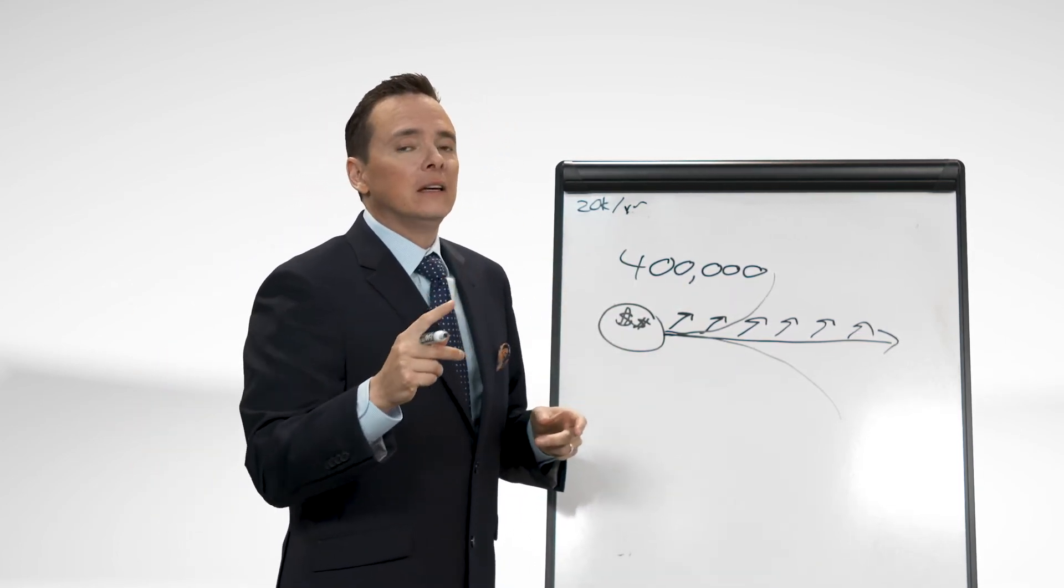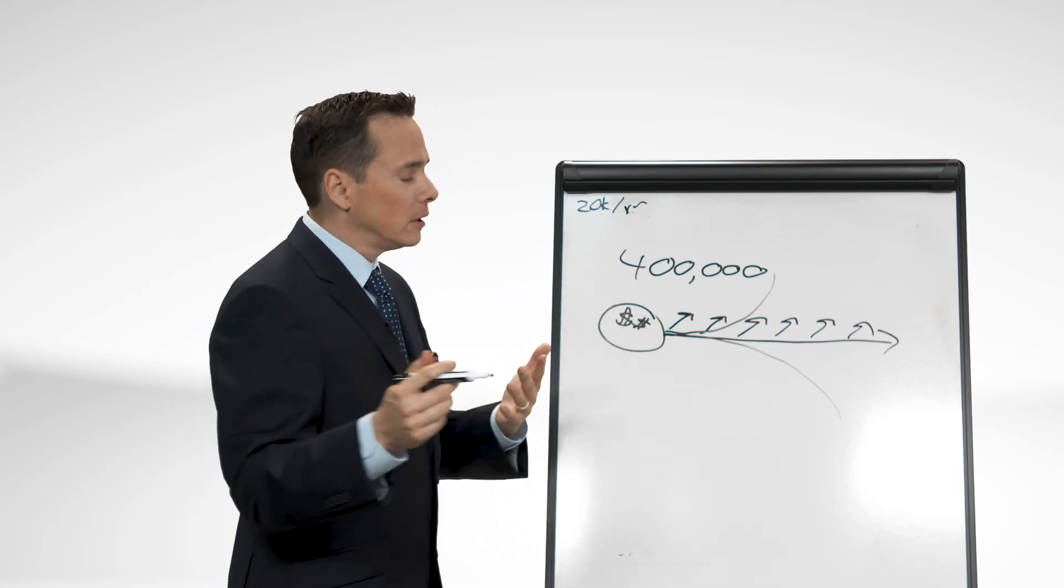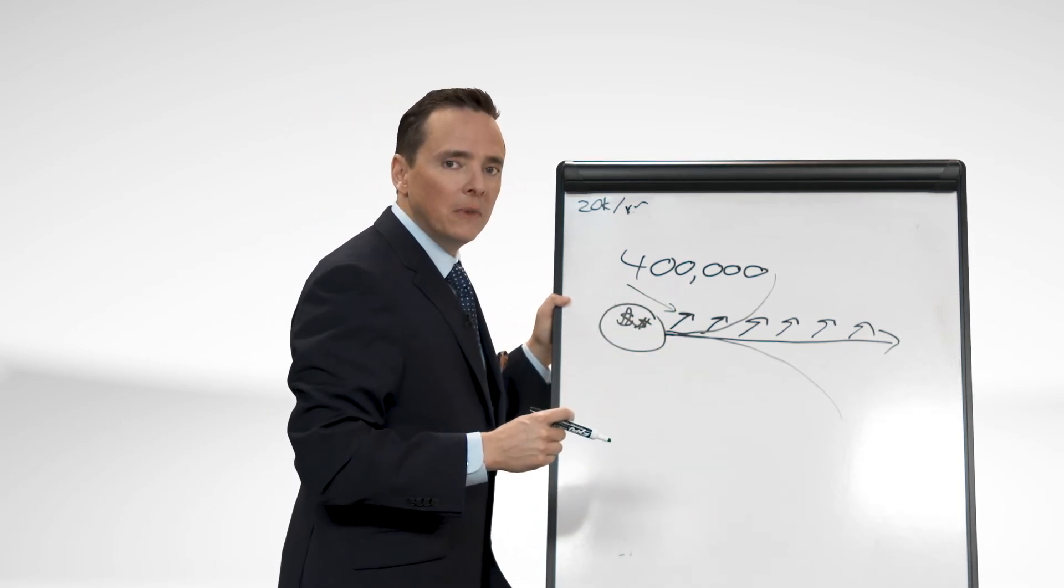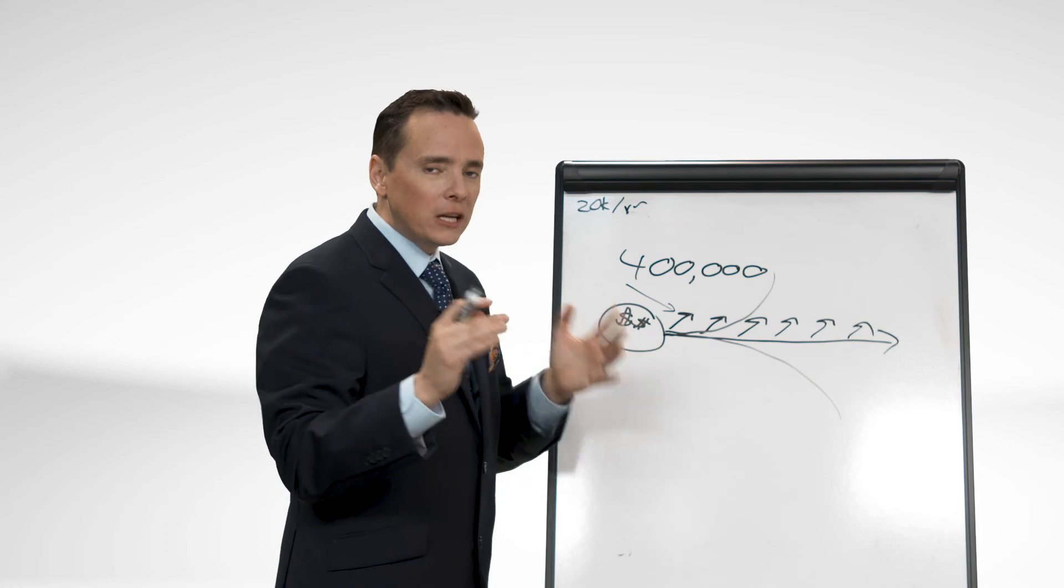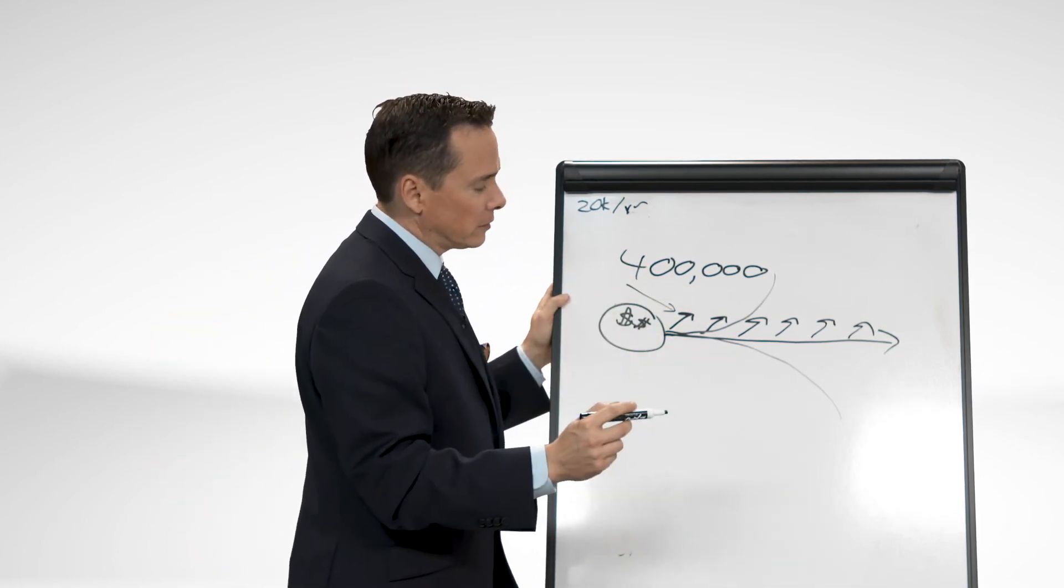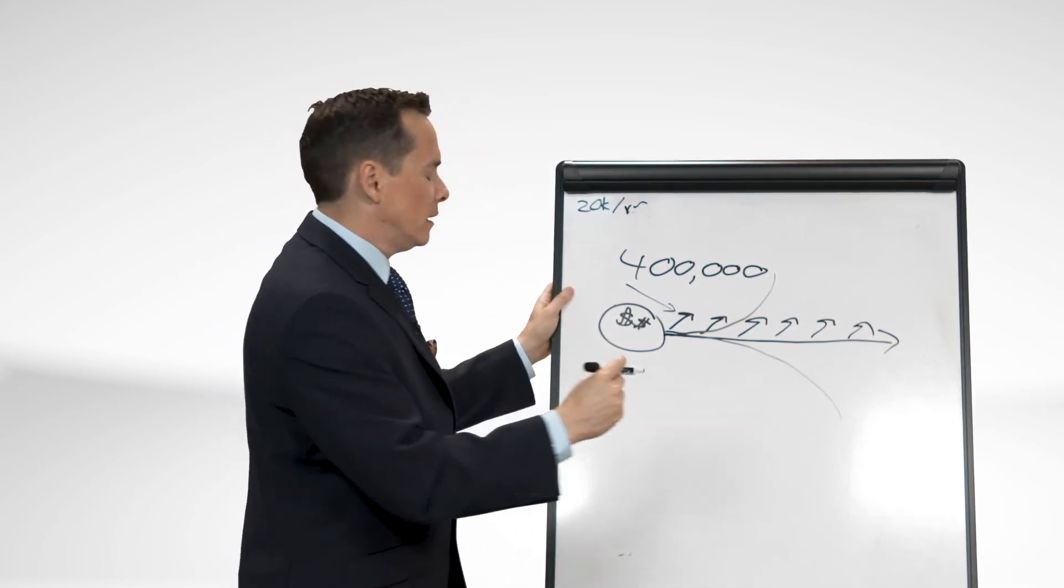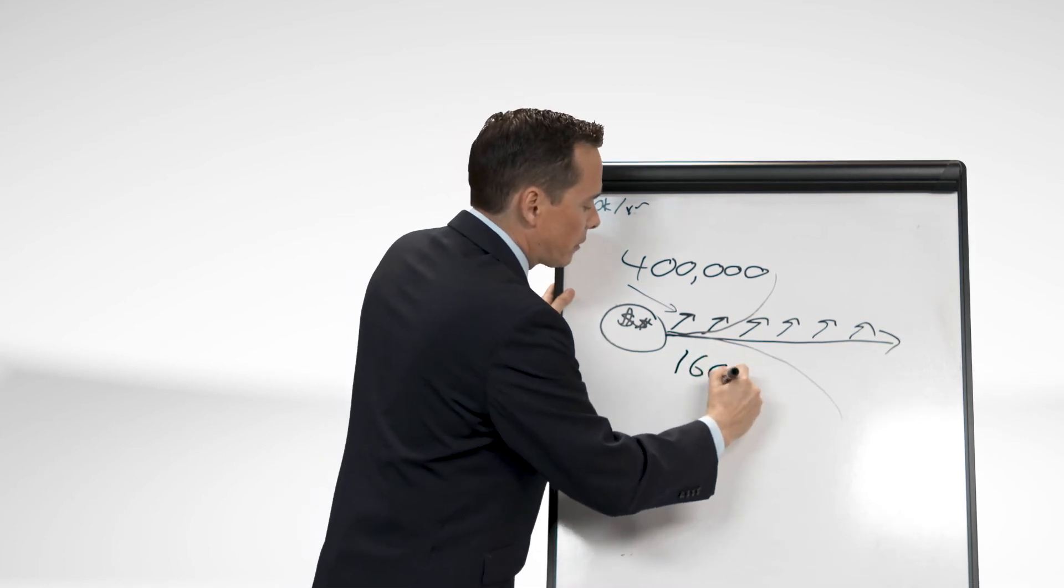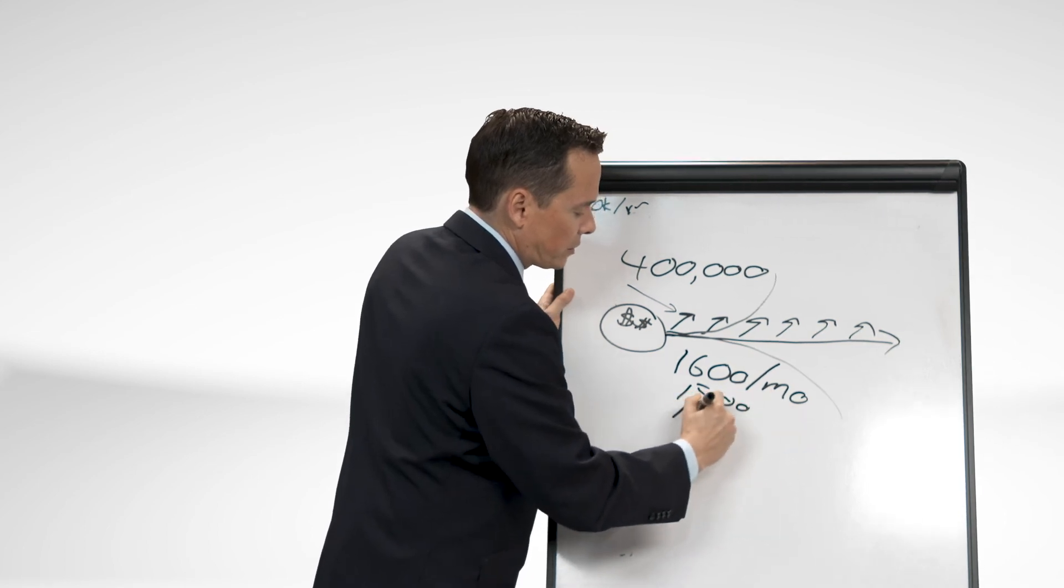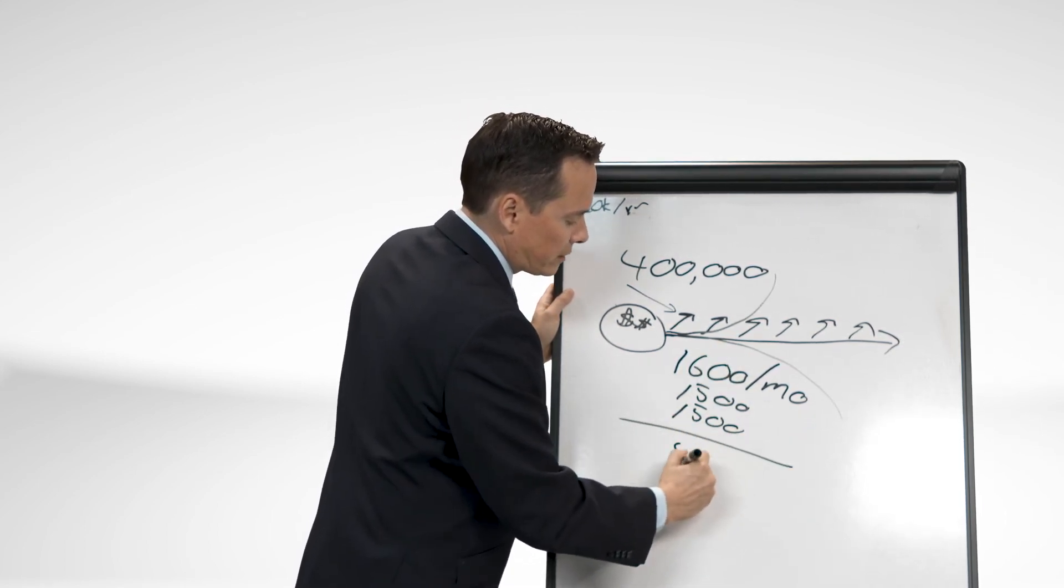Now, the big question is, if you have your money invested the way it should be in a diversified portfolio, how much money is this? How much money can you get on a monthly basis safely from $400,000? The answer is, let me do my math, $1,600 a month. So if we add that to the $1,500 Social Security, $1,500 Social Security, that is $4,600 a month.